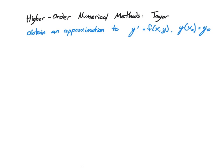Now, one thing you want to remember is that we're still working with our domain. Our domain D is going to be equal to f of x comma y, where x-naught is less than or equal to x, less than or equal to our last x that we want to approximate, and our y's can be anything. This gives us a nice convex set.